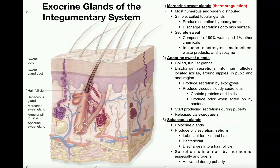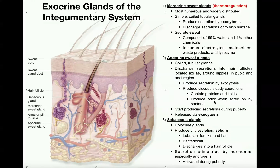Like merocrine sweat glands, apocrine glands also produce their secretion via exocytosis, but they discharge into the hair follicle rather than onto the skin surface. Their secretion is also very different — apocrine glands produce viscous, cloudy secretions that contain a lot of proteins and lipids. Bacteria on the skin metabolize this secretion and produce a foul odor. This is why your armpits stink without deodorant: the apocrine glands are numerous in the axillary region, and bacteria metabolize their secretion to produce that smell.